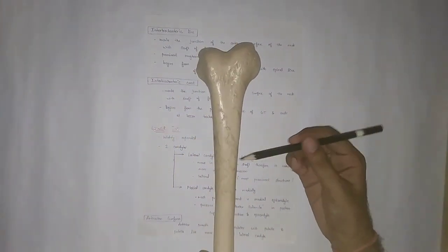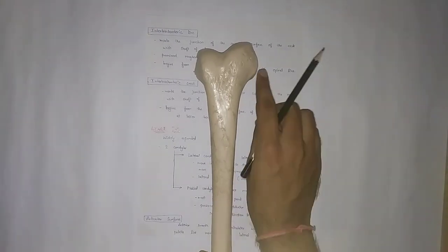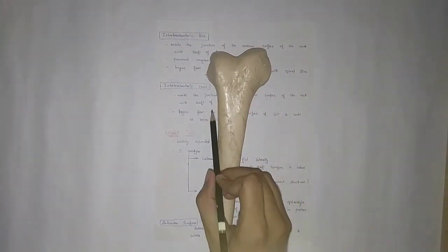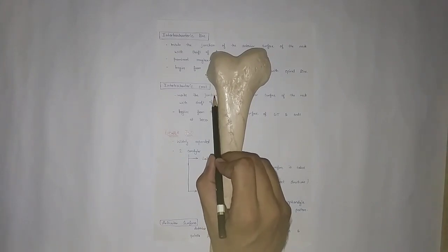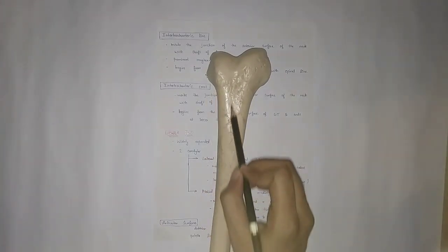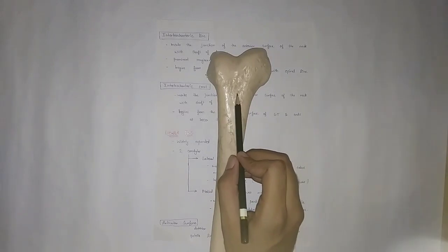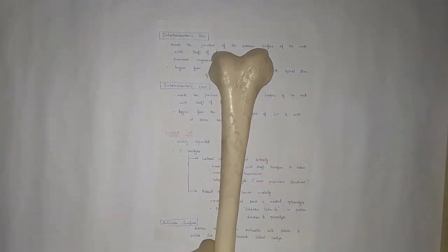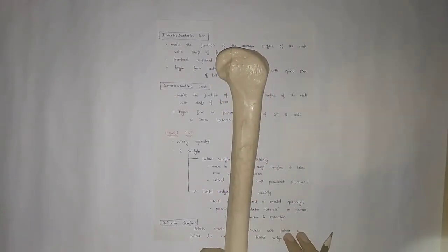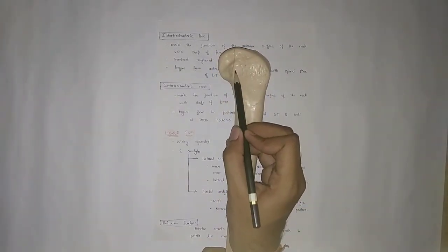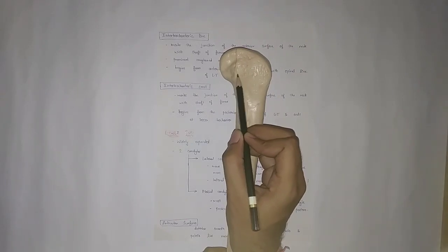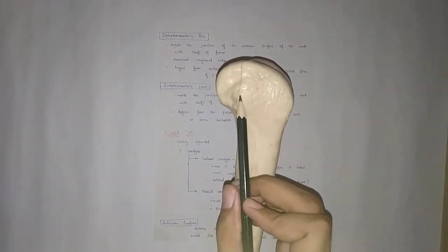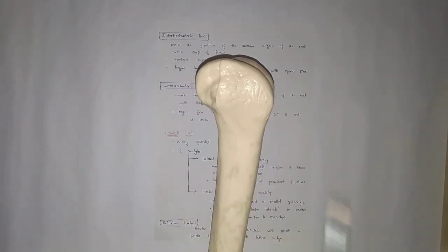The lateral condyle is present in almost the same line as compared to the shaft. If we look at the medial condyle, it is quite deviated from the shaft. Because the lateral condyle is in line with the shaft, weight transmission occurs through the lateral condyle. The most prominent part on the lateral surface is the lateral epicondyle.